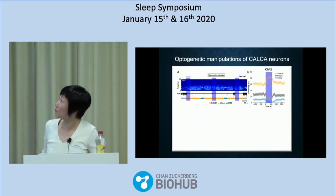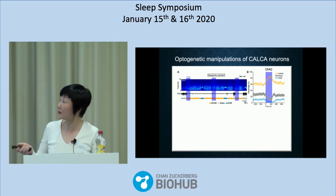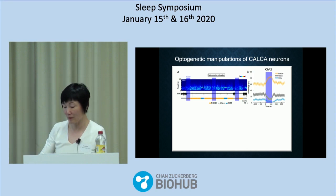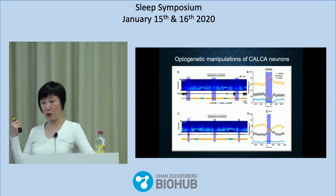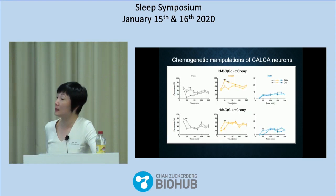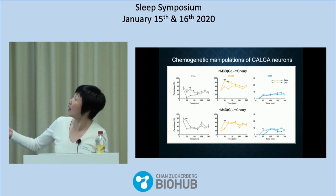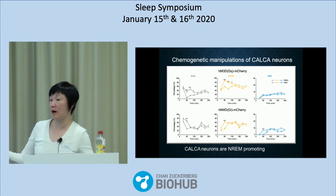Are they sleep-promoting? We did optogenetic activation through channelrhodopsin. We turned on the laser for two minutes per trial every ten minutes. When we turn on the laser at time zero, there's an immediate increase in the probability of non-REM sleep and a decrease in both wake and REM. When we inactivated these cells through the inhibitory opsin iC++, we saw a decrease in sleep and increase in wakefulness. The GQ-mediated chemogenetic activation caused an increase in non-REM sleep for about two hours after CNO injection, and GI-mediated inactivation caused a decrease in sleep. Based on both optogenetic and chemogenetic activation and inactivation, we know these neurons are non-REM-promoting — our second criterion.